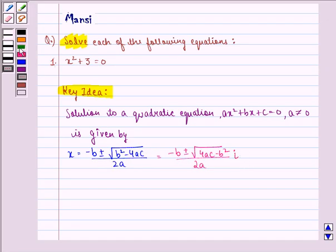Now let us find the solution to this question. It's given to us that x square plus 3 equals to 0.